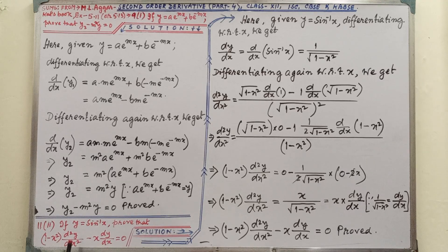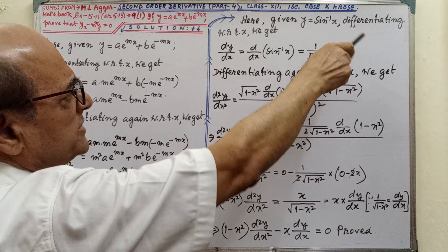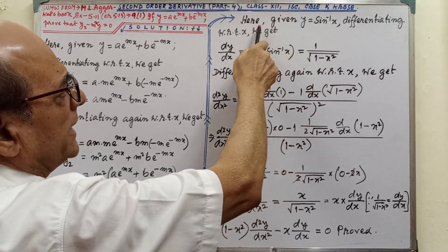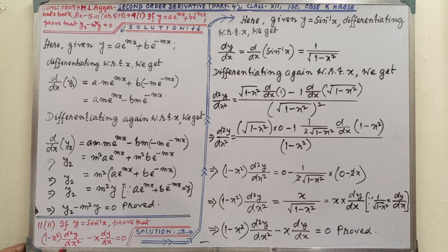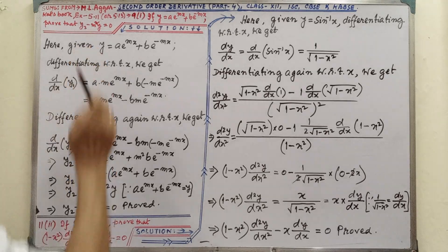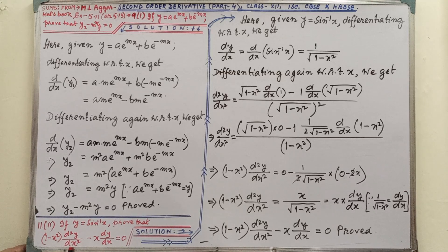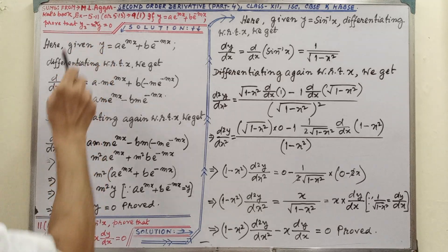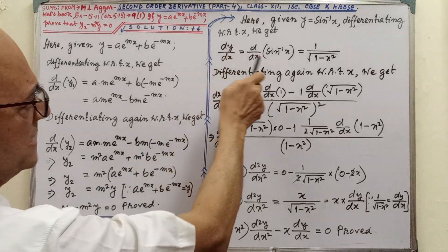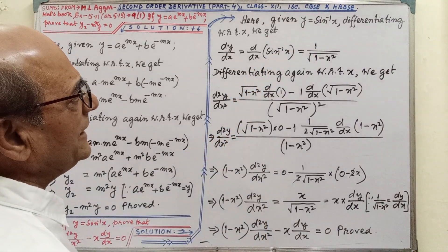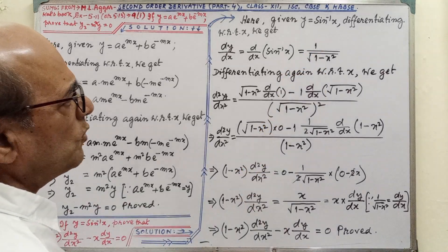Now part 2, number 11. If y = sin⁻¹(x), prove the given result. Here y = sin⁻¹(x); differentiating with respect to x we get dy/dx. According to the sum we have to prove the result involving y2. The symbol we use depends on the sum — here y is given so we use y2 notation, and for the other part we use the dy/dx symbol. Now differentiation of sin⁻¹(x) is 1/√(1 − x²).